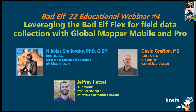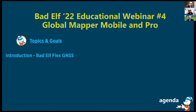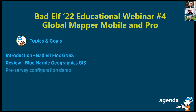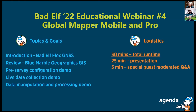So what is on the agenda for today? Topics and goals: we're going to introduce you to the Battle Flex, the GNSS solution from Bad Elf. We'll review Blue Marble Geographics GIS — the overall desktop software and complete package. We're going to have a pre-survey configuration demo, show you some live data collection, and show you post-processing manipulation of the demo data.